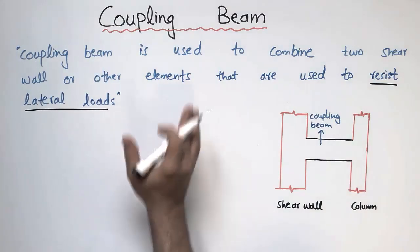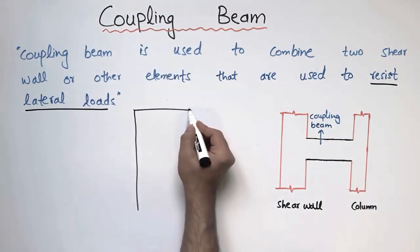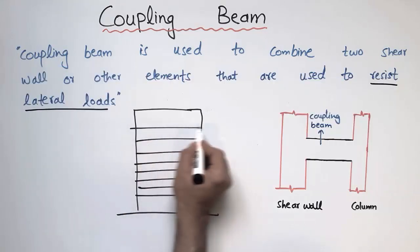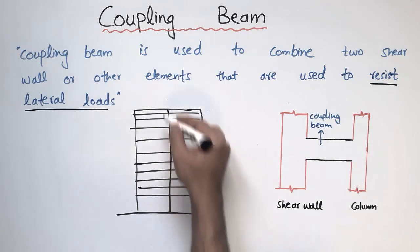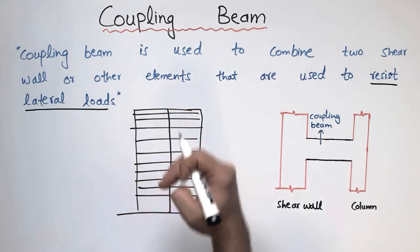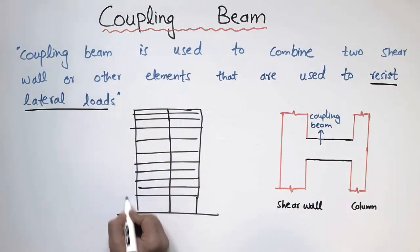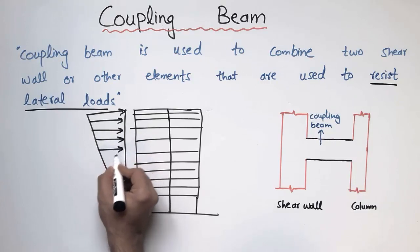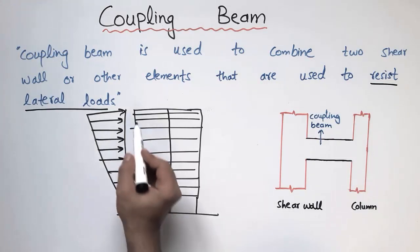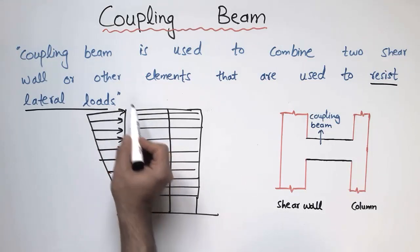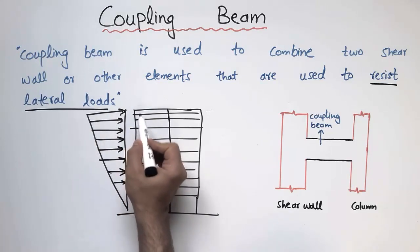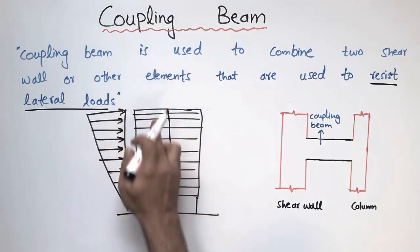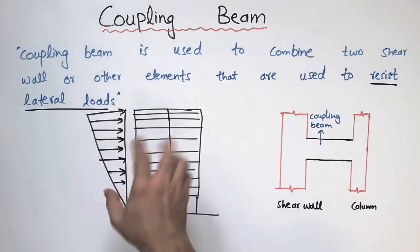Let's consider a high-rise building with more than 30 storeys. As the height of the building increases, the lateral forces increase as well. At the top of the building there is a maximum load acting — the maximum earthquake load or the maximum wind load. So the upper portion of the building takes more wind or earthquake load, and we need to increase the stiffness and overturning resistance at the top. That is why we provide the coupling beam in high-rise buildings.